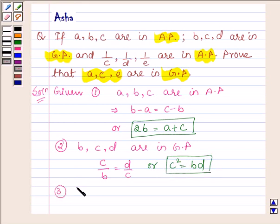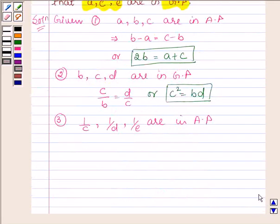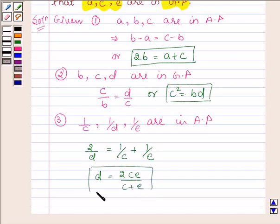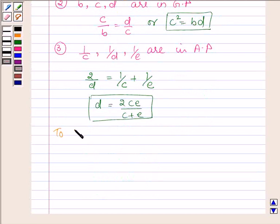And last, we are given that 1 upon C, 1 upon D, and 1 upon E are in AP. So this again implies that 2 times 1 upon D is equal to 1 upon C plus 1 upon E, which can be written as D is equal to 2CE upon C plus E. And we have to show that A, C, E are in GP.